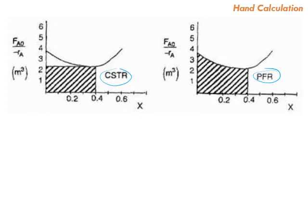The CSTR is operating at the exit concentration, which also represents the exit temperature. So it's operating at the rate of reaction evaluated at the exit temperature and concentration, which are the same as those inside. Because the reaction is exothermic, we have enough heat released from the reaction that stays inside, which raises the temperature, so T is higher than T0. The CSTR is operating at the highest temperature and therefore the highest rate of reaction. The minimum point on the Levenspiel plot reflects this highest rate of reaction.